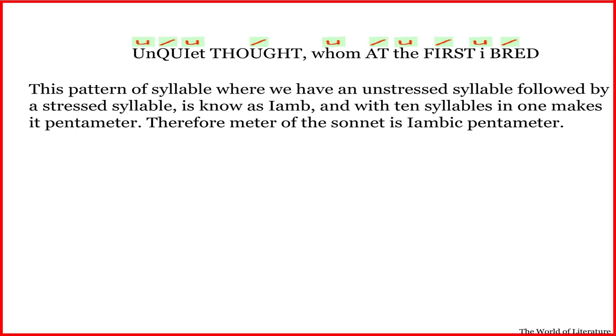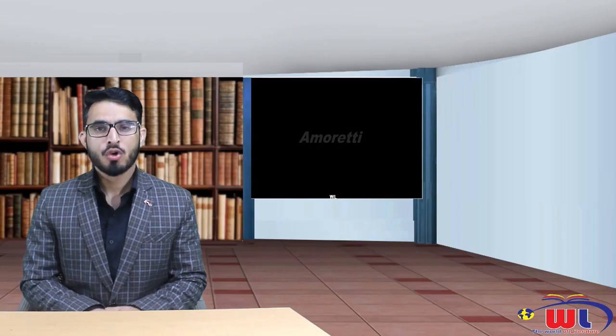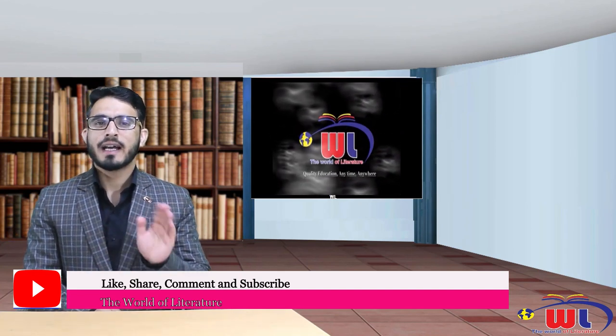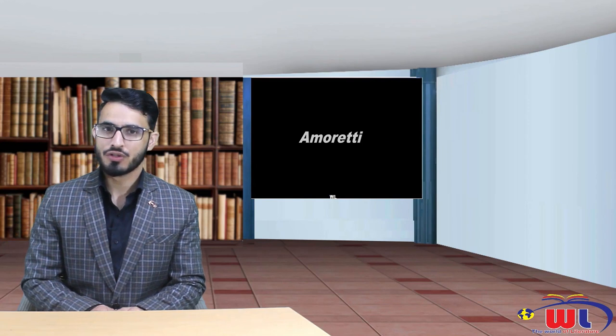So what we have is a pattern where an unstressed syllable is followed by a stressed syllable — this is known as an iamb. With ten syllables in one verse, it makes it pentameter; therefore the meter of the sonnet is Iambic Pentameter. The sonnets in Amoretti are written in Iambic Pentameter. There would be certain sonnets which may not follow this meter strictly, but in general the view is that they are written in Iambic Pentameter, with ten syllables and an unstressed syllable followed by a stressed syllable.